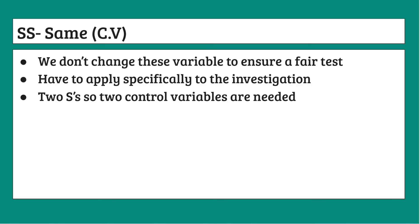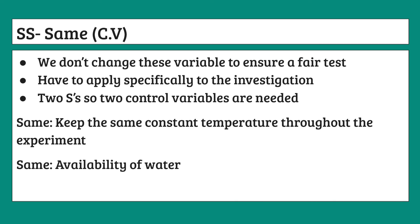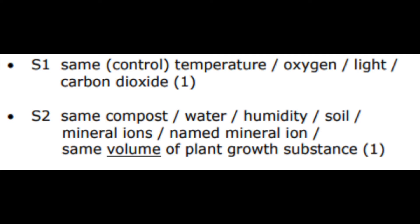Now for the two S's at the end — these both stand for same. Same refers to the variables of the experiment that we do not intend to change, in order to ensure the experiment is fair. These are also known as control variables. We need to identify two suitable control variables. One is keeping the same temperature, since temperature affects enzyme activity which may in turn affect root growth. Another is ensuring the plants have the same availability of water, as different water availability may affect how much the root grows in the given time period. There are many valid options, and you should be able to get both marks from this part most of the time.